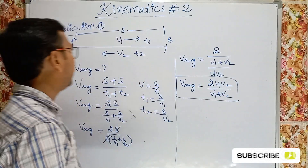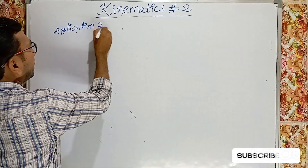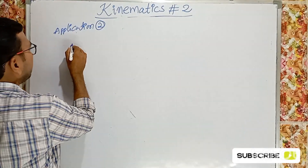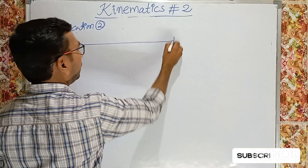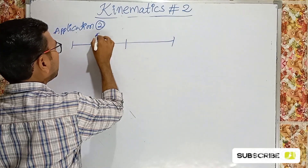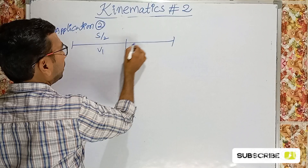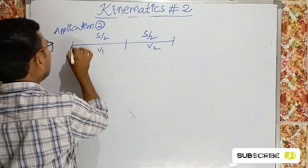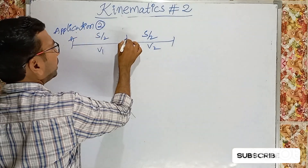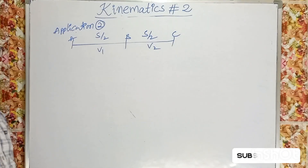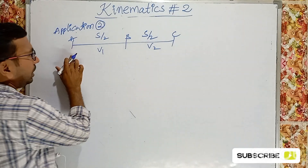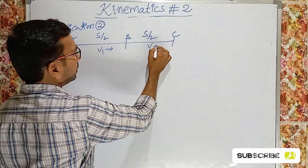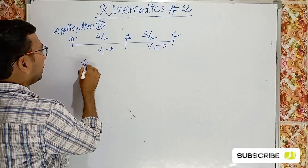Application 2: A person moves the first half of the distance with speed V1, and the next half of the distance with speed V2, traveling from A to B to C. Find V_average. V_average = total distance / total time = (S/2 + S/2) / (T1 + T2).